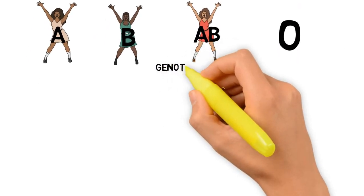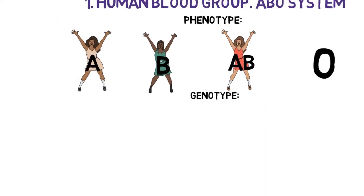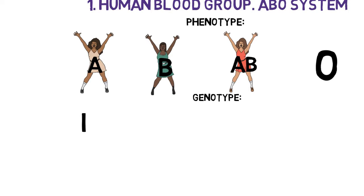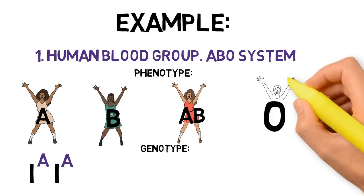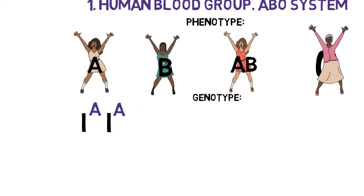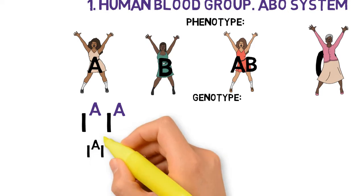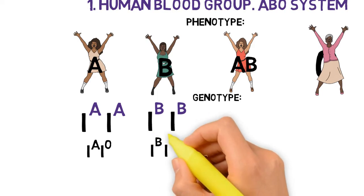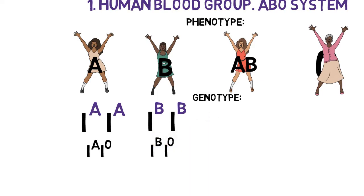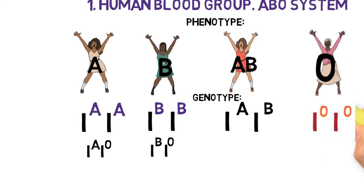And what about genotype now? The genotype I^A I^A — that is a homozygous state. I^A I^O is also possible in a heterozygous state. For blood group B: in homozygous condition it has I^B I^B, and in heterozygous condition it has I^B I^O. For AB, it has only a heterozygous condition: I^A I^B. And for blood group O, it is I^O I^O in homozygous condition.